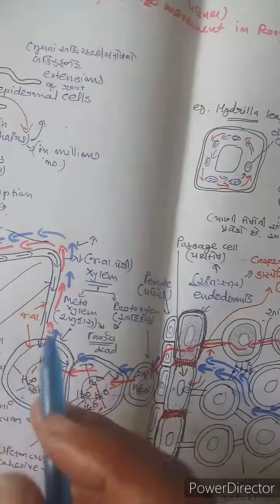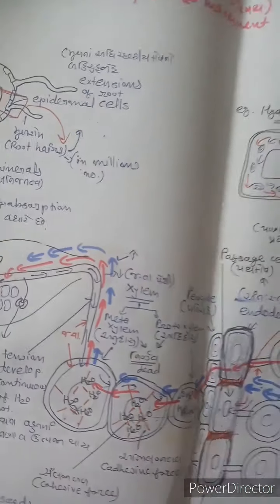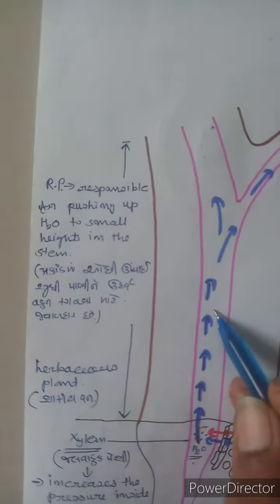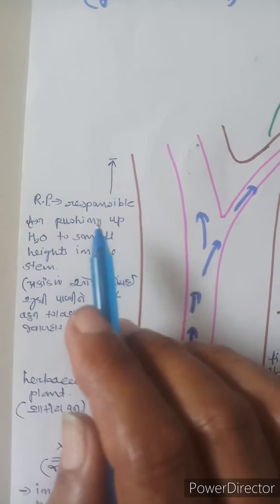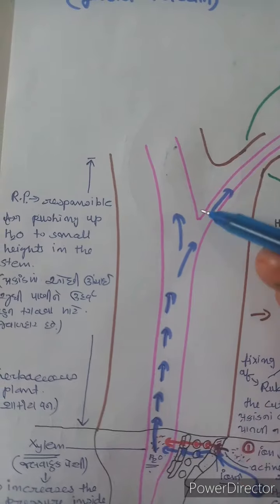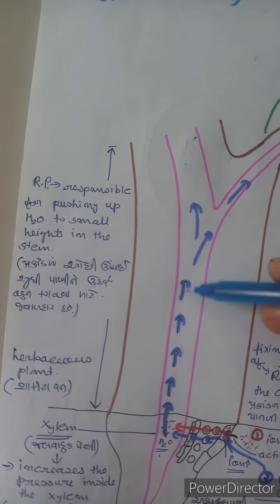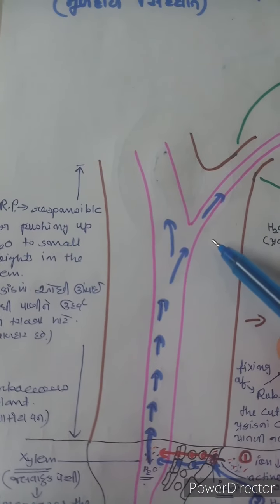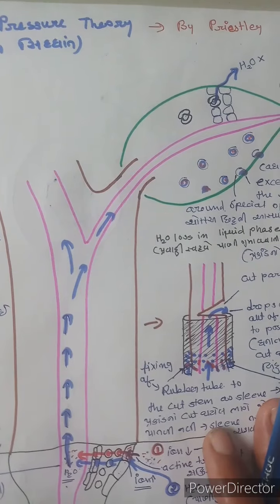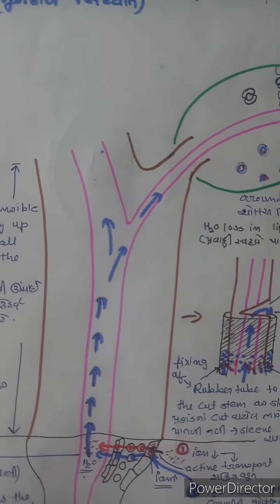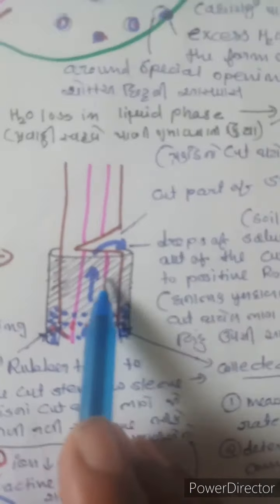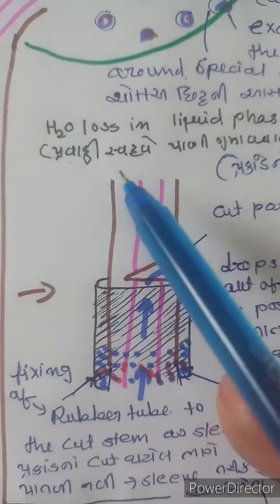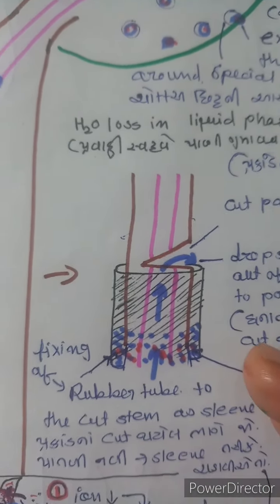The root pressure is responsible for pushing out water to small heights in the stem. Root pressure pushes water upward.